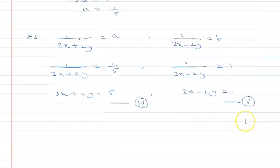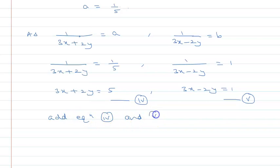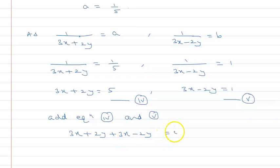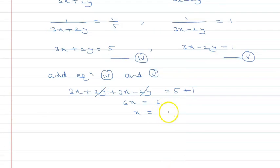Now if we add equations 4 and 5, the 2y terms will eliminate. Adding: 3x + 2y + 3x - 2y = 5 + 1. The 2y cancels, giving 6x = 6, so x = 6 upon 6 = 1.